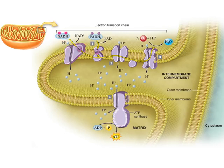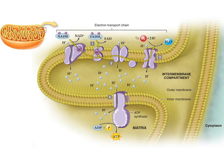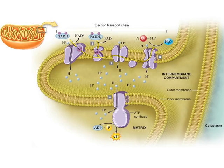NADH donates the two electrons it received during glycolysis or the Krebs cycle to the first enzyme of the electron transport chain. These two electrons will then travel through the second, third, and fourth proteins. Follow the arrow from the two electrons at the first enzyme through the other electron carriers. The electrons release energy as they travel through the proteins that make up the electron transport chain. The mitochondrion uses this energy to produce ATP.